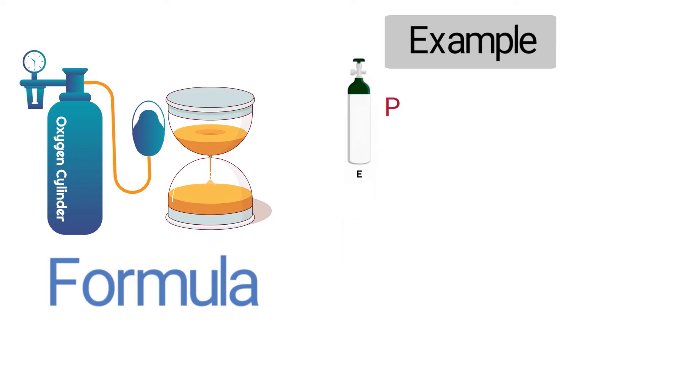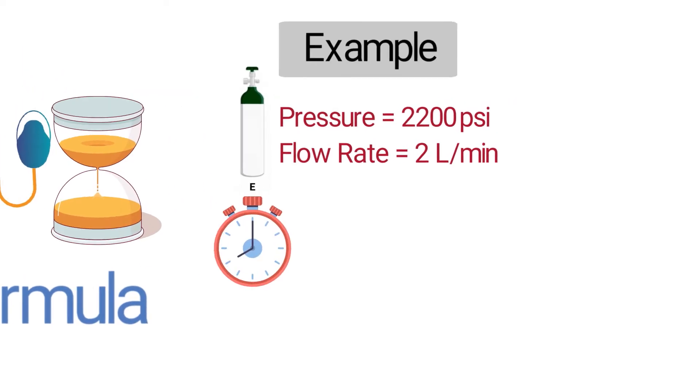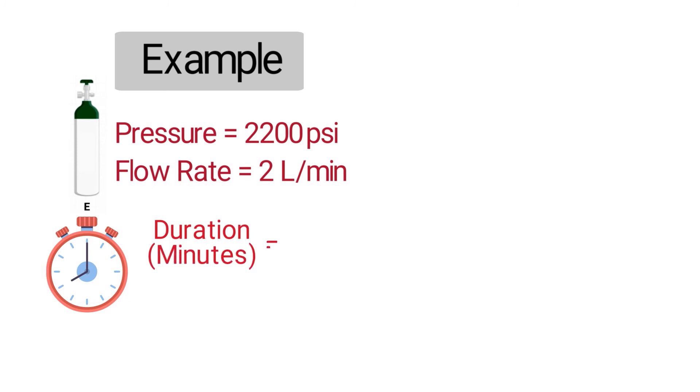Let's say you have an E cylinder with a pressure of 2200 and a flow rate of 2 liters per minute. The duration of the oxygen tank can be calculated as follows: the duration in minutes equals 2200 times the cylinder factor, which for an E cylinder is 0.28, then you divide that number by the gas flow the patient is receiving, which in this case is 2 liters per minute.